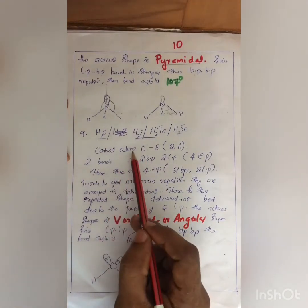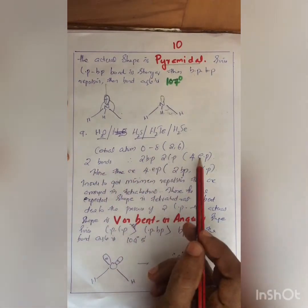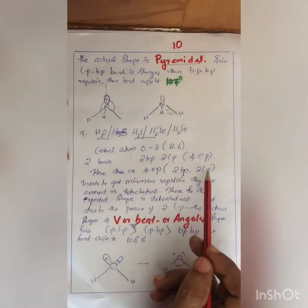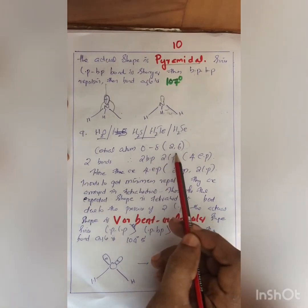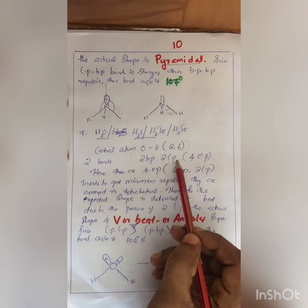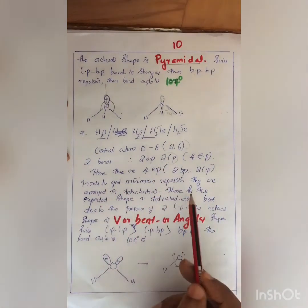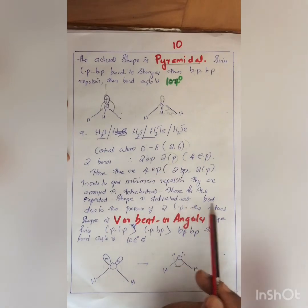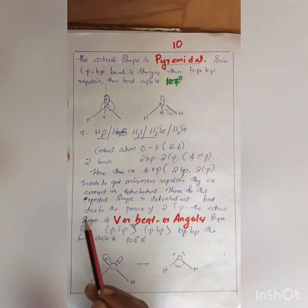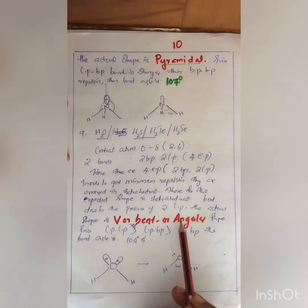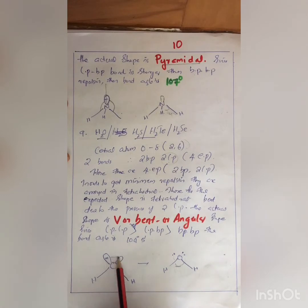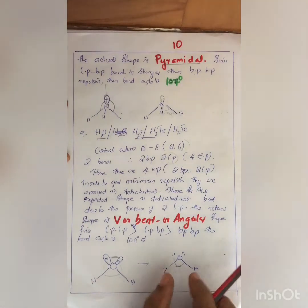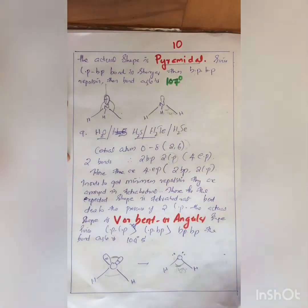For H2O, the central atom is oxygen, atomic number 8. There are 2 bonds: 2 BP and 2 LP, giving 4 EP. Out of 6 outer electrons, two are used for bonding, leaving 4 electrons — that is 2 lone pairs. In order to get minimum repulsion, the expected shape is tetrahedral. But due to the presence of two lone pairs, the actual shape is V-shape, bent, or angular. Since lone pair–lone pair repulsion is highest, the bonds come closer together, and the bond angle is 104 degrees 5 minutes.